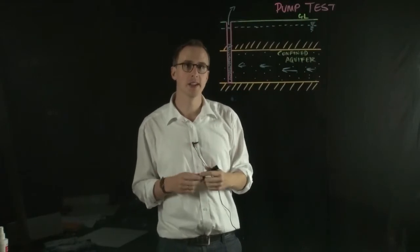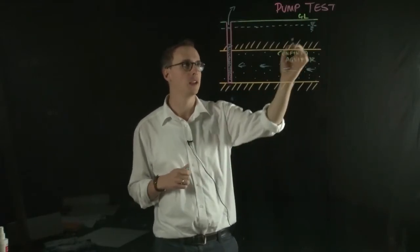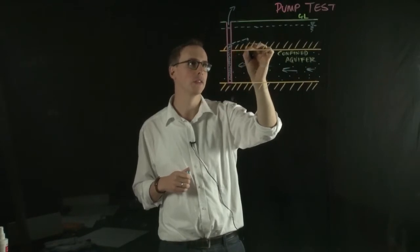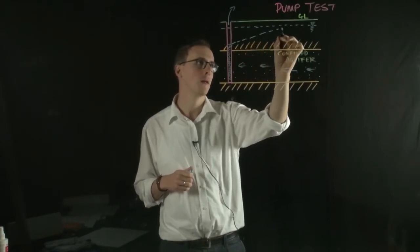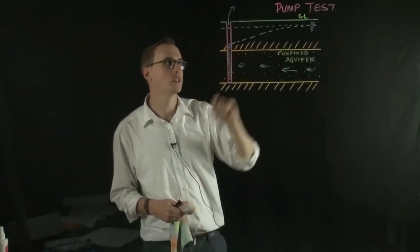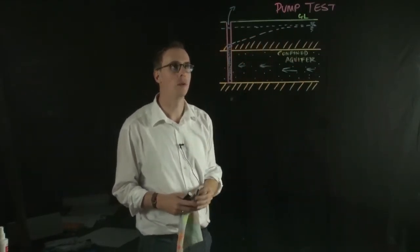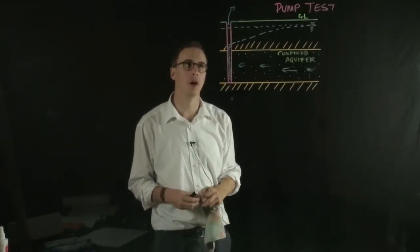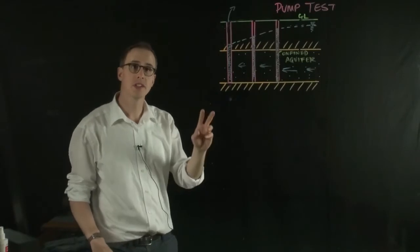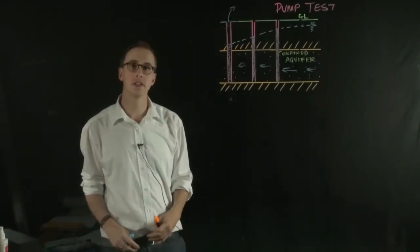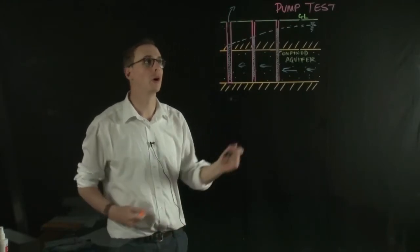And a steady state will be achieved over time where the water level will probably end up looking something like this. Now what we need to do is get the water level at a number of different points away from the pumping well. So we drill observational holes and we measure the water height in each of these observational holes at a known distance away from the pumping well.